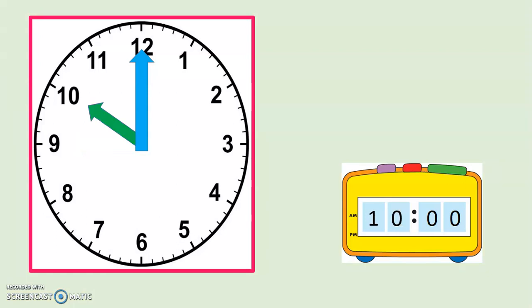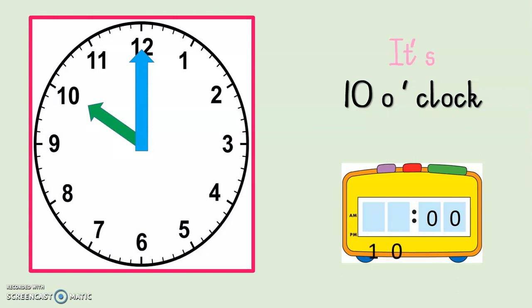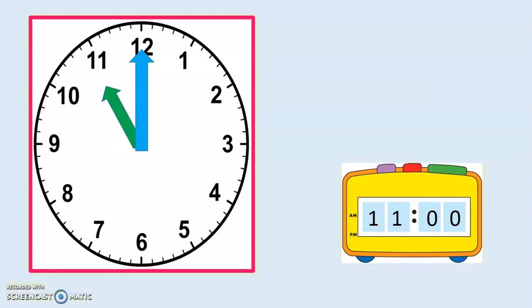Long hand on the 12, short hand on the 10 — it is 10 o'clock. Digital time is 10:00 in the morning; in the evening it will be 22:00, which is 10 o'clock in the evening. It is 11 o'clock — digital time 11:00 in the morning; in the evening it will be 23:00, meaning 23 hours have gone past in our day.